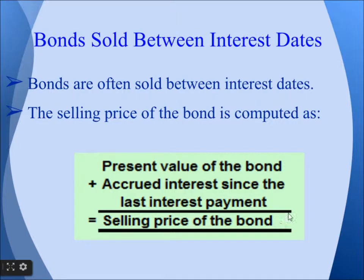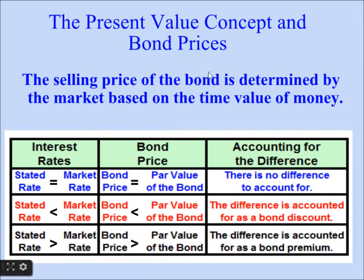The selling price of the bond is determined by the market based on the time value of money. If the stated rate equals the market rate, the bond price equals par value with no difference to account for. If the stated rate is less than the market rate, the bond price is less than par value, and the difference is accounted for as a bond discount. If the stated rate is greater than the market rate, the bond price is greater than par value, and the difference is accounted for as a bond premium.